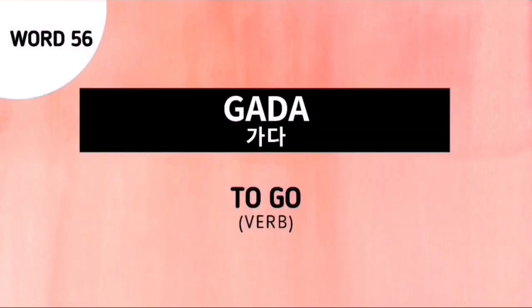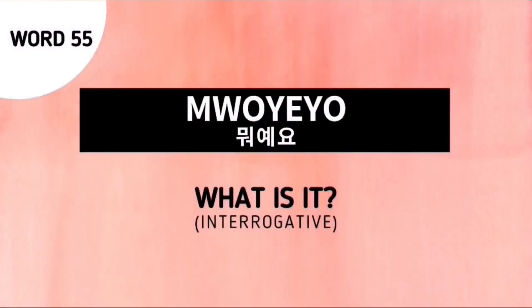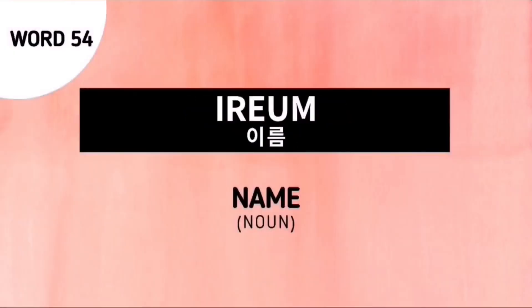Word number 56 is Kada, which means to go. Next word is Poeo, which means what is it. Next word is Tiram, which means name.